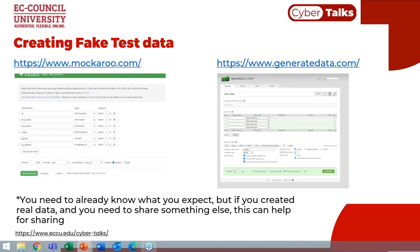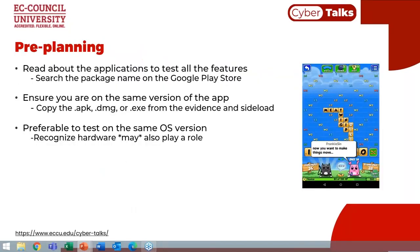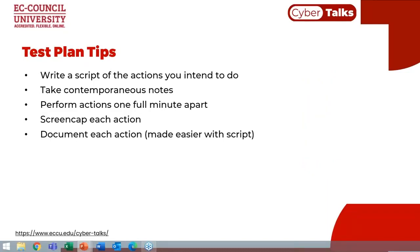Once your profile is created, you need to start your pre-planning. You've done research about the application, so you want to document and write out an actual test plan action by action. Hopefully you've borrowed the APK, executable, or DMG from the original evidence and side-loaded it so you know you're working on the same version. Operating systems and dot versions are really important. Then document your test plan — write a script of what you intend to do and follow it. Contemporaneous notes are absolutely critical so you know exactly what action you took at what moment.